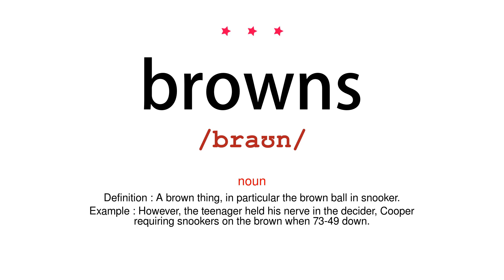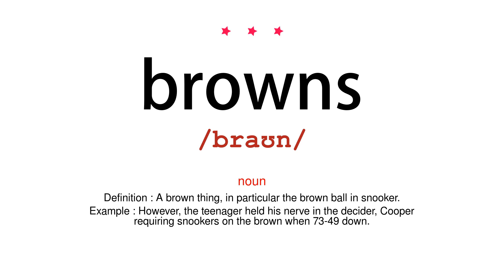Noun. Definition: a brown thing, in particular the brown ball in snooker. Example: however, the teenager held his nerve in the decider, Cooper requiring snookers on the brown when 73-49 down.